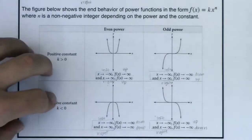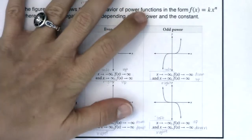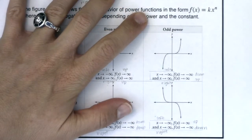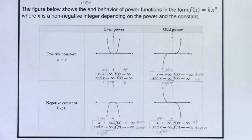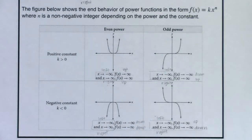This is just for power functions. We're going to extend it to polynomials a little later in this section. There can be many different end behaviors — when we get to rational functions, exponentials, and logs, we might have horizontal asymptotes or no end behavior at all.